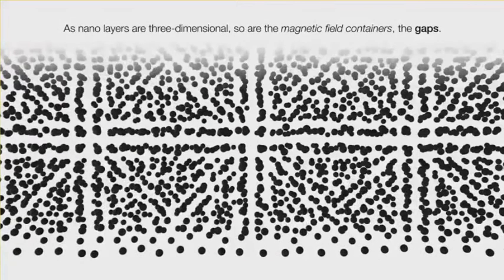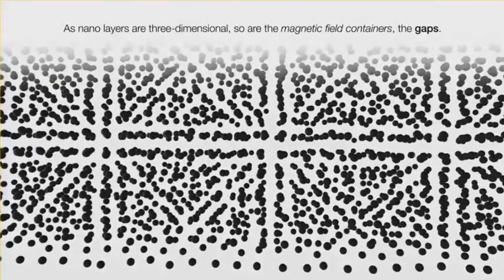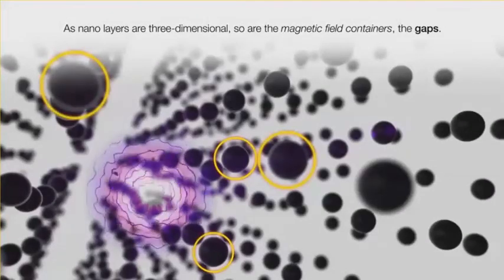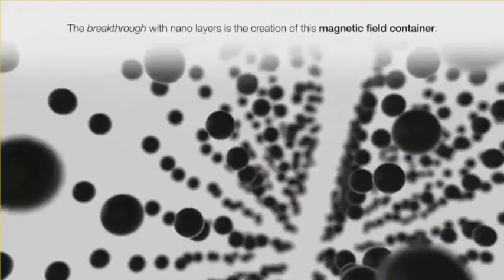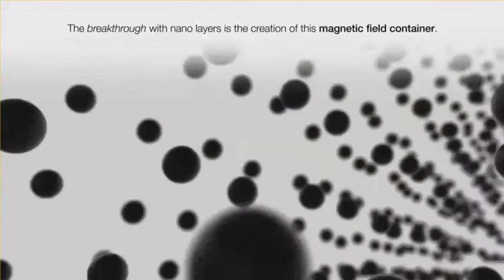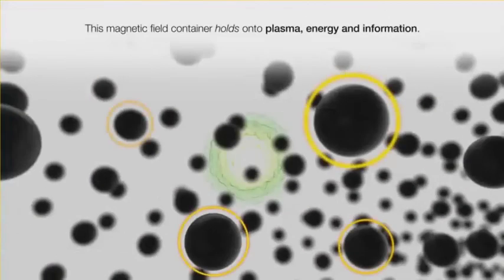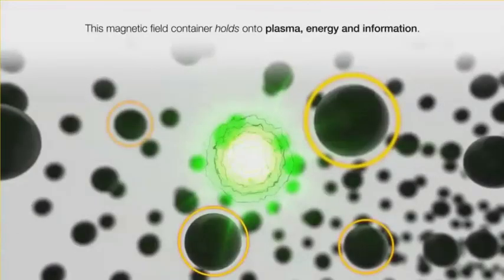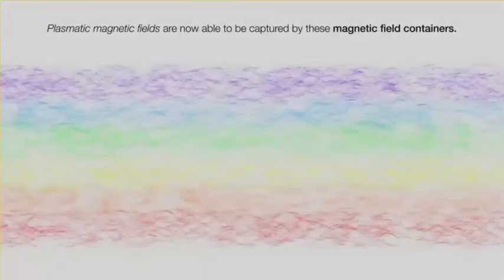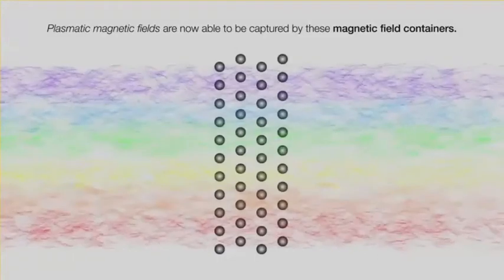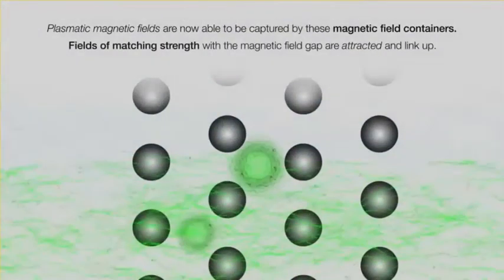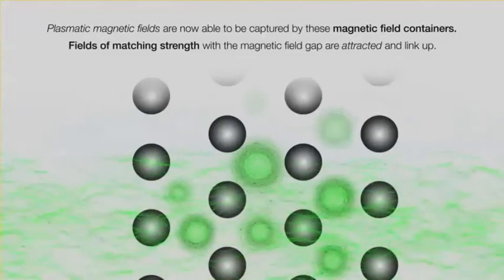As nano-layers are three-dimensional, so are the magnetic field containers — the gaps. The breakthrough with nano-layers is the creation of this magnetic field container, which holds onto plasma energy and information. Plasmatic magnetic fields are not able to be captured by these magnetic field containers. Fields of matching strength with the magnetic field gap are attracted and link up.